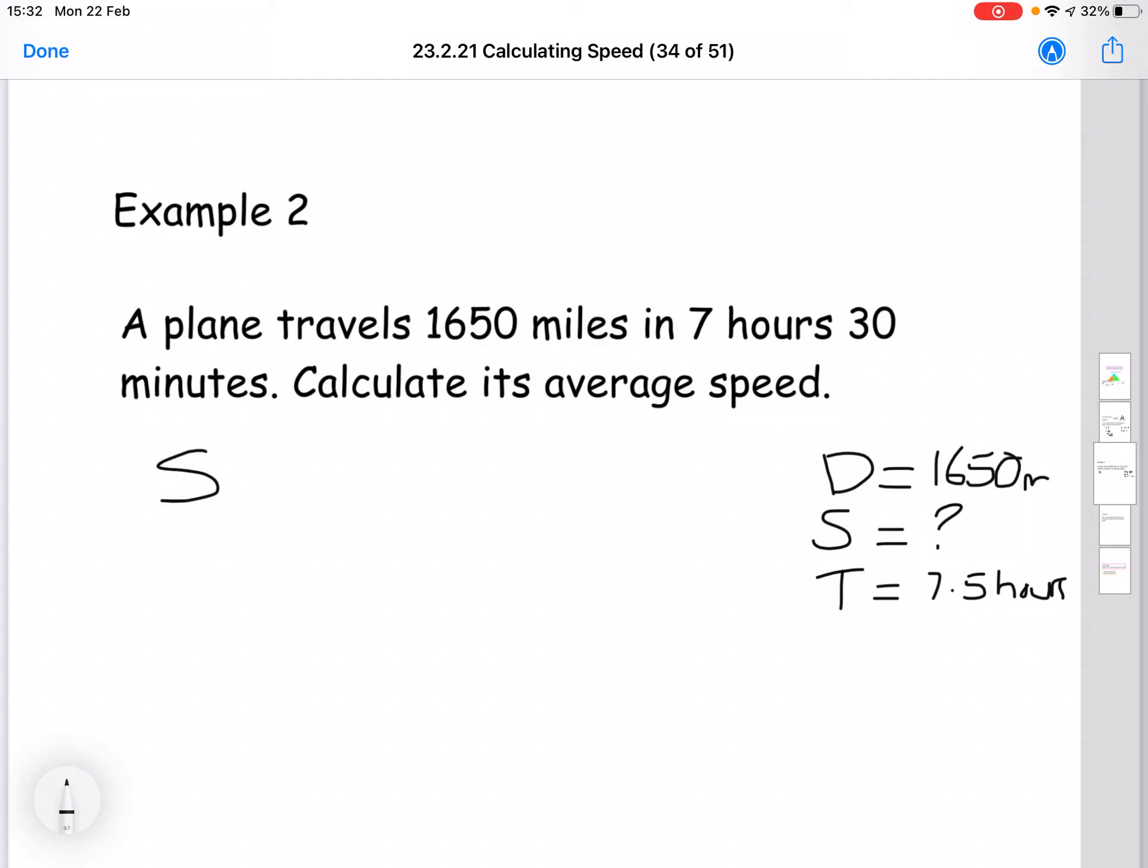So when we do our formula, speed equals distance over time. So that will be 1650 divided by 7.5. So you would use a calculator to do this, which is going to give you 220. And then again, for our units, we have miles as our distance and it's hours and minutes. So it's going to be miles per hour.